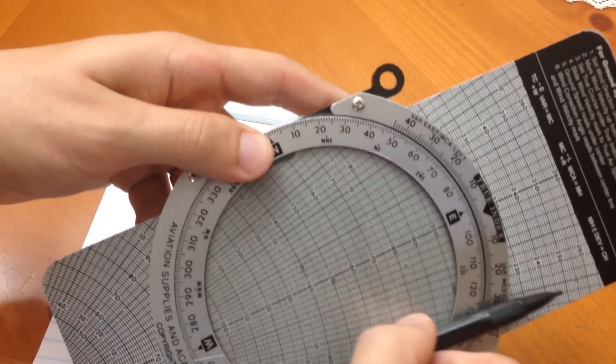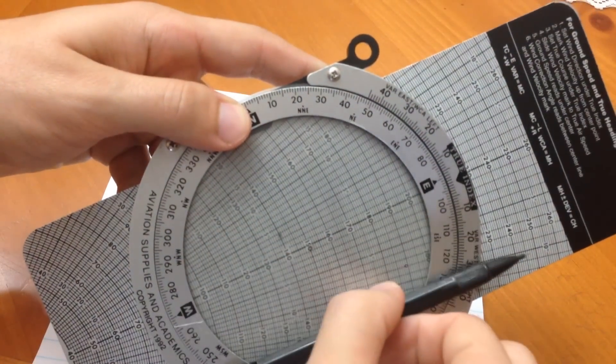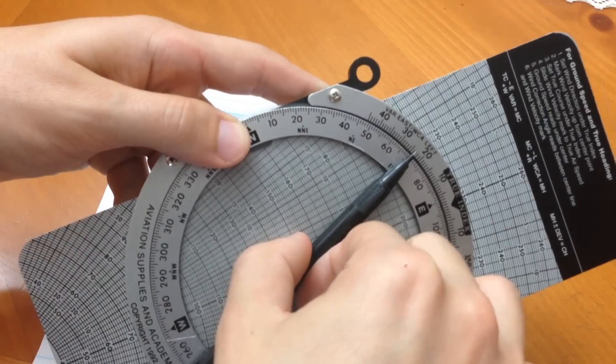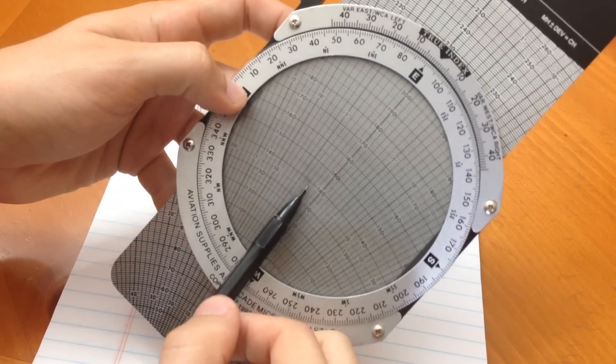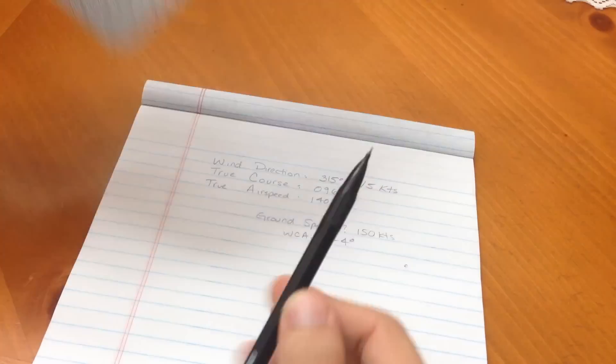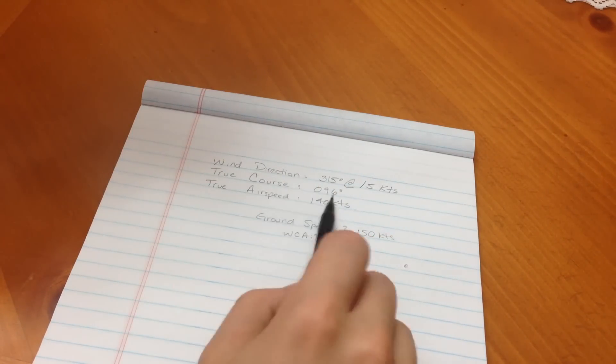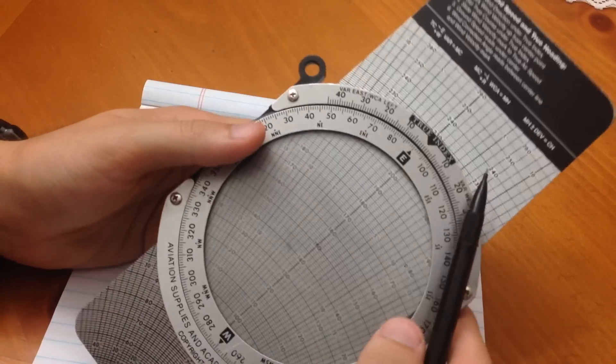So, to compensate for that push, we have to grab the aircraft to the left and hold that heading. So, we're going to make negative four degrees to our true course to correct for wind.